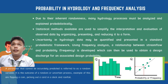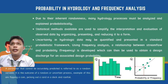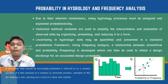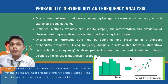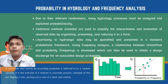The uncertainty in hydrology data may be quantified and presented in a standard probabilistic framework using frequency analysis — a relationship between streamflow and probability. This is developed to obtain discharges for an HCA design probability. On the figure, the y-axis is discharge in cubic meters per second or cubic feet per second, the x-axis is time, and the diagonal represents probability or frequency. A parameter that cannot be accurately predicted is referred to as a random variable — the outcome of a random or uncertain process.